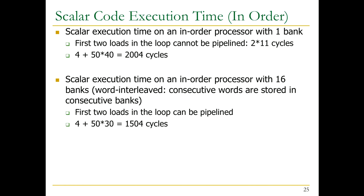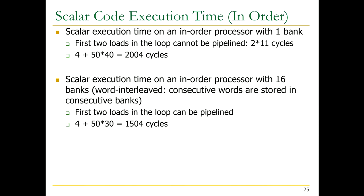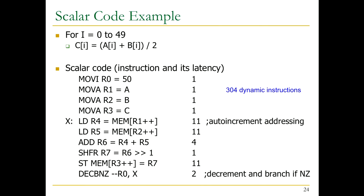Dynamic instruction count: 6 instructions per loop iteration times 50 iterations equals 300, plus 4 setup instructions equals 304. Scalar execution time on an in-order processor with one memory bank: all instructions in the loop body are dependent on each other, so you add up latencies: 11 + 11 + 4 + 1 + 11 + 2 = 40 cycles per iteration, times 50 iterations equals 2000 cycles, plus 4 setup cycles equals 2004 cycles total (assuming branch predicted not-taken). With 16 memory banks, you can pipeline the two loads: the second load starts one cycle after the first, reducing the two loads from 22 cycles to 12, giving 30 cycles per iteration × 50 = 1504 cycles total.